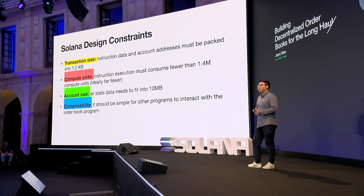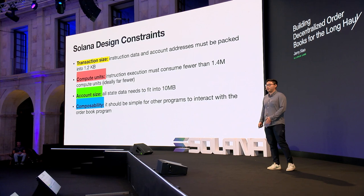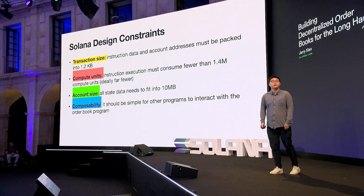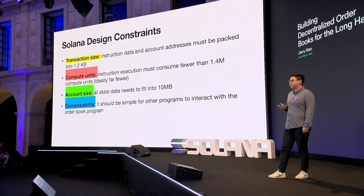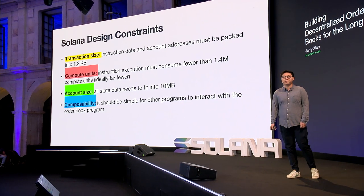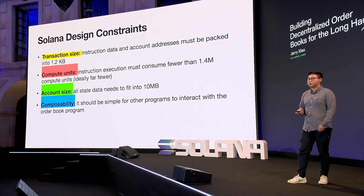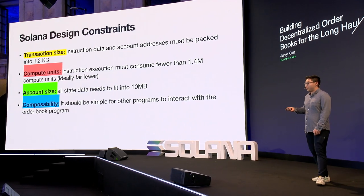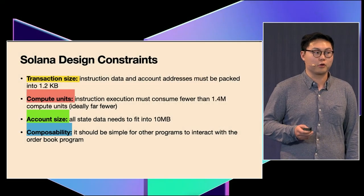Next, I want to talk about the design constraints that Solana poses. It's really important when building smart contracts to understand the limitations of the system. The first is transaction size — when sending data to the network, you need to pack everything into exactly 1.2 kilobytes, including all instruction data and account addresses. Account addresses are each 32 bytes, which limits you to around 30 accounts that can be used. Compute units correspond to the actual amount of computation used when processing the transaction — you generally want to keep this as small as possible. Account size is another constraint: the maximum is 10 megabytes, and for every additional byte you pay more SOL as rent. Composability is also very important — you want the interface for your program to be as easy to work with as possible.